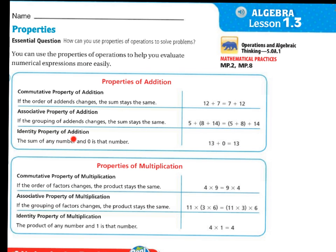Identity property of addition. The sum of any number and 0 is that number. So 13 plus 0 is 13. A million plus 0 is still going to be a million. So whatever number plus the 0, that is the identity property. It's going to give you the same number that's in the addend.